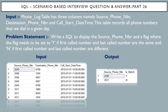For source phone number 2345, we have 5 entries for 1st July 2012. The first call number is 6789 and the last call number is also 6789. Since both are the same, we display in the output with an additional column called is_match with flag Y. For source phone number 3311, the first call number is 7890 and the last call number is 1234 — they are different, so the flag is N.